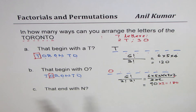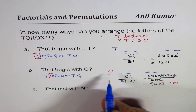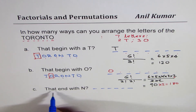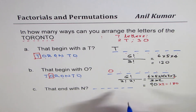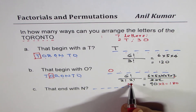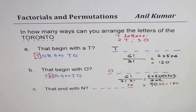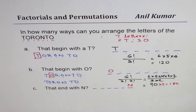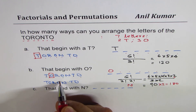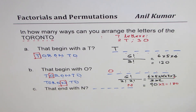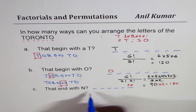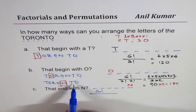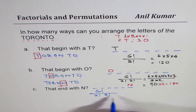Now the last condition: the word ends with N. Again we have one, two, three, four, five, six, seven positions. The word is still Toronto, and we fix N at the end. That leaves us with six positions to fill using the remaining letters. So we have six factorial divided by what is repeated — three O's and two T's — giving two factorial times three factorial in the denominator.